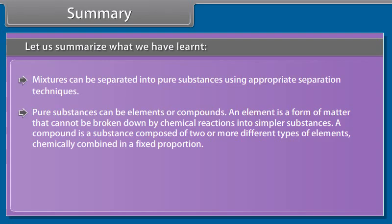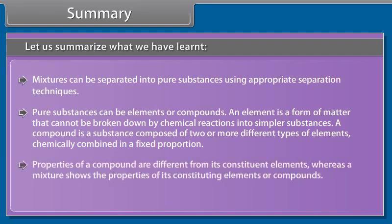Summary. Let us summarize what we have learned. Mixtures can be separated into pure substances using appropriate separation techniques. Pure substances can be elements or compounds. An element is a form of matter that cannot be broken down by chemical reactions into simpler substances. A compound is a substance composed of two or more different types of elements chemically combined in a fixed proportion. Properties of a compound are different from its constituent elements, whereas a mixture shows the properties of its constituting elements or compounds.